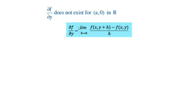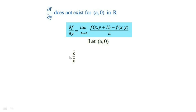Let (a, 0) be any point in the rectangle region where a ≠ 0. In order to show that the first-order partial derivative of f with respect to y doesn't exist for many points (a, 0) in the rectangle region R, we consider ∂f/∂y at the point (a, 0).